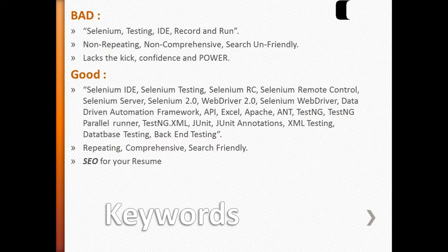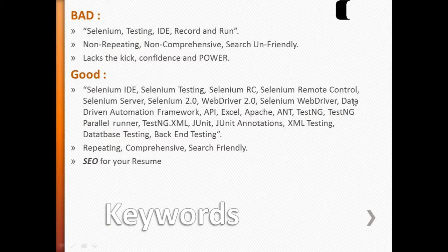Avoid using 'record and run' — it doesn't really qualify you. Your keywords should be specific: 'Selenium IDE,' 'Selenium RC,' 'Selenium Remote Control.' Someone might search for 'Selenium RC' while another searches for 'Selenium remote control' — so include both. If you just put 'remote control,' you will not rank as highly as someone who put 'Selenium remote control.' This is all about search engine optimization — similar to web search, but applied to job portals. Make sure you list these keywords to make your resume search-friendly.